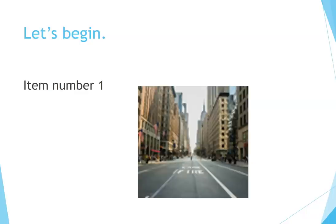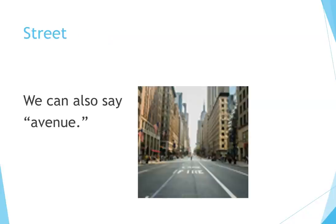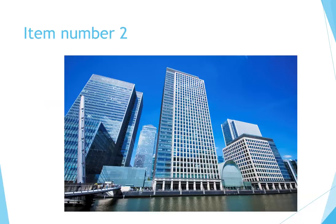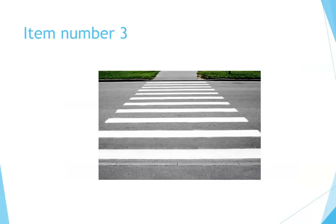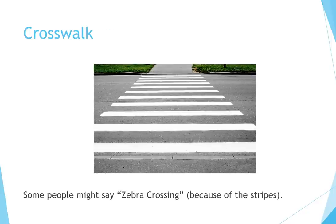Let's begin. Item number one: street — we can also say avenue. Item number two: building or buildings. Item number three: crosswalk — some people might say zebra crossing because of the stripes.